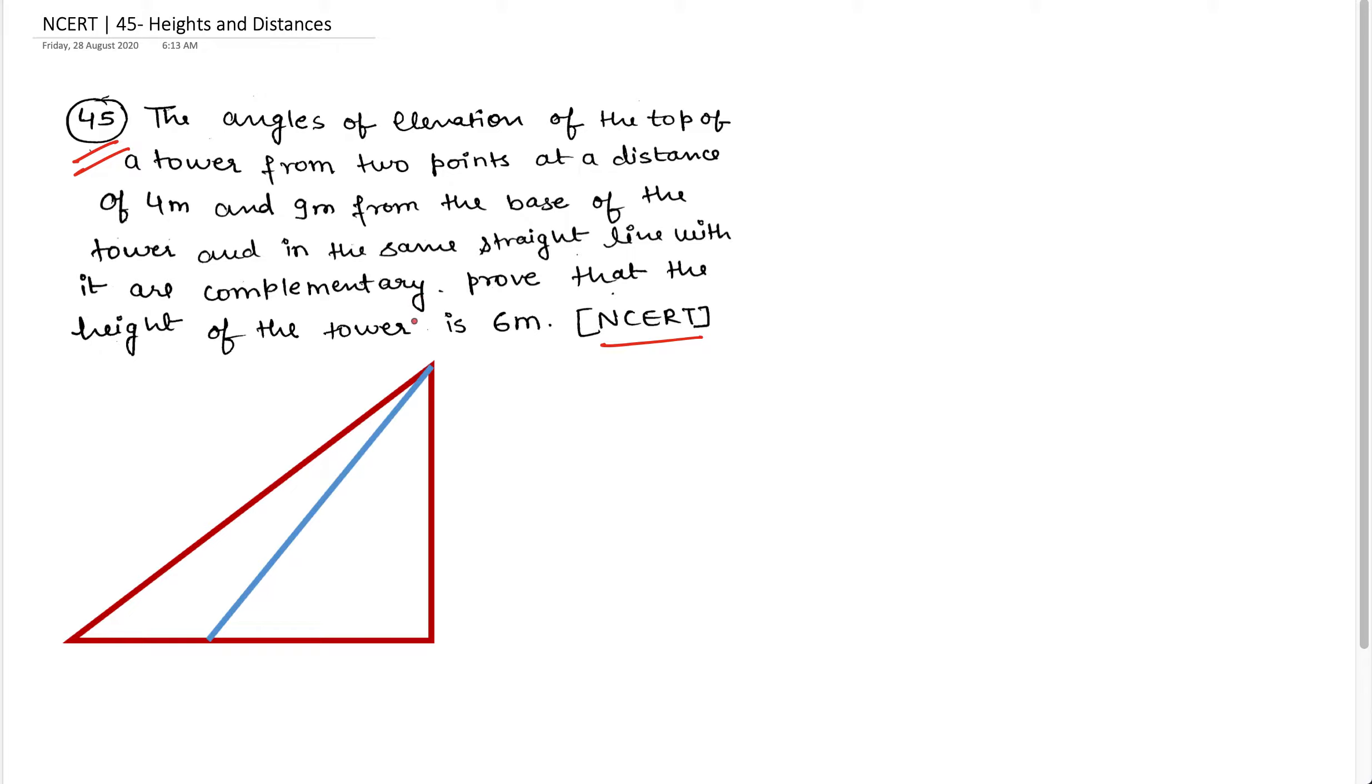So let's understand the question correctly and solve it. The question is that the angle of elevation of the top of a tower from two points at a distance of 4 meter and 9 meter from the tower and in the same straight line are complementary. This means that this distance from the tower is 4 meter and this angle is theta.